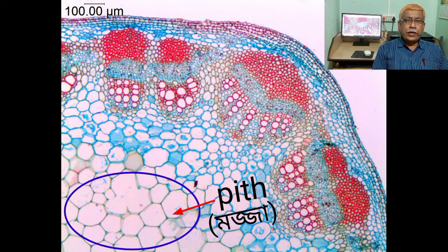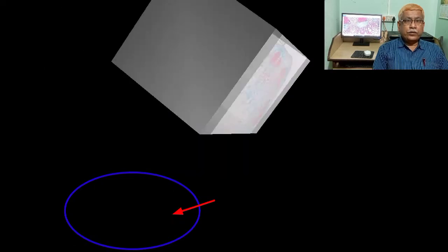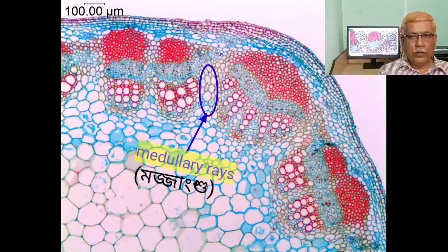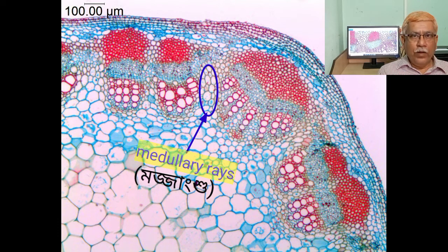Pith has parenchymatous cells with intercellular spaces. It helps in the storage of food materials. The strips of parenchymatous cells found between vascular bundles are called medullary rays.